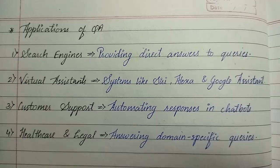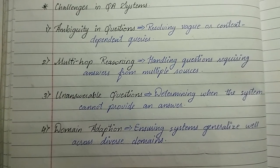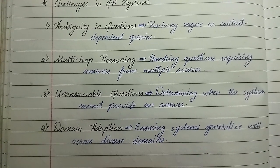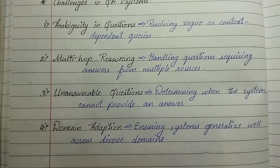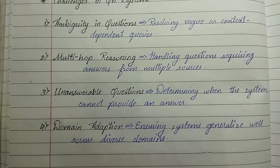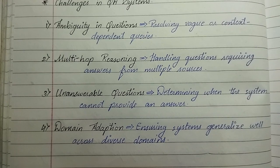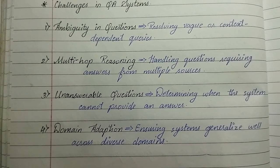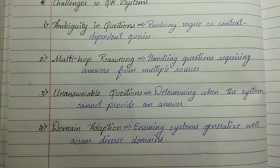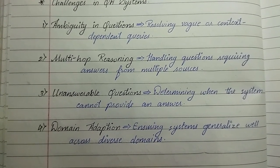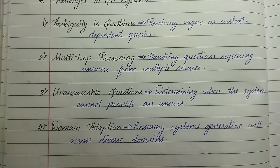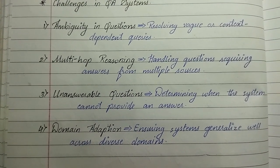Now we'll see challenges in question answering systems. First is ambiguity in questions — resolving vague or context-dependent queries. Second is multi-hop reasoning — handling questions requiring answers from multiple sources. Third is unanswerable questions — determining when the system cannot provide an answer. Fourth is domain adaptation — ensuring systems generalize well across diverse domains.